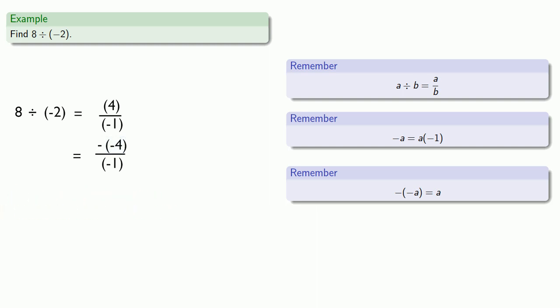But now it's an additive inverse. So I can rewrite an additive inverse as a number times negative 1. And now I have a common factor of negative 1 in numerator and denominator, so we can remove it.